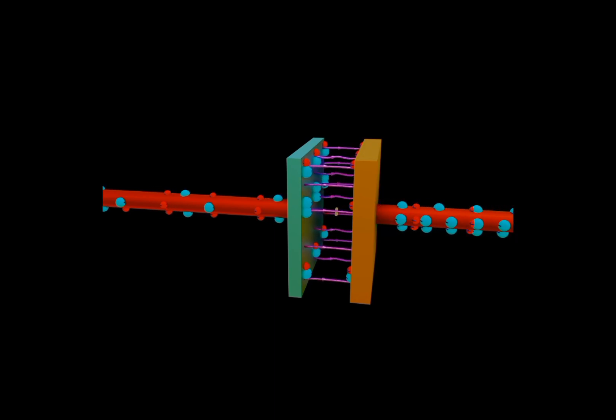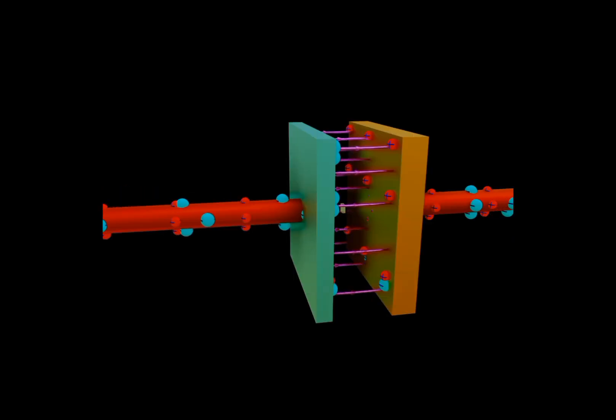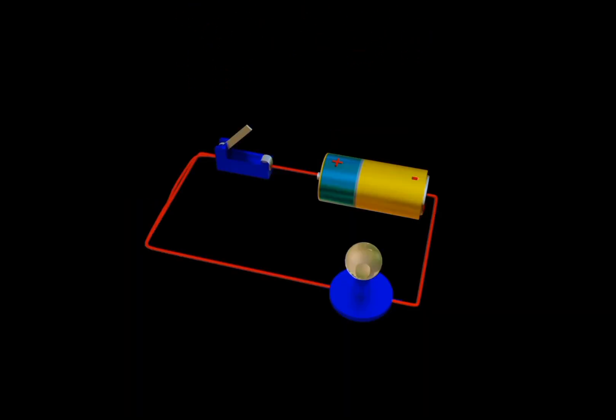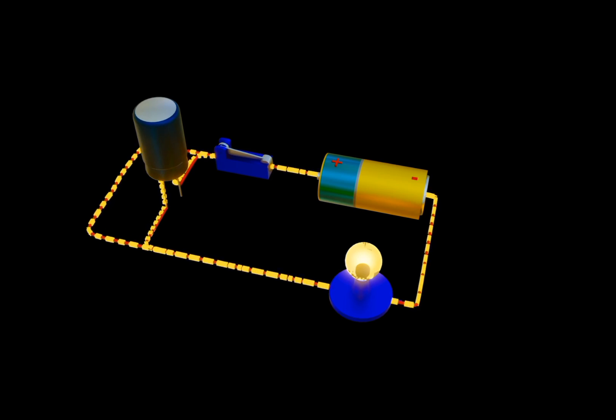Once the negatively charged plate cannot accept more electrons and positively charged plate does not release more electrons, the capacitor is said to be fully charged. Since the capacitor is fully charged, it becomes an open circuit, since no more electrons can flow.